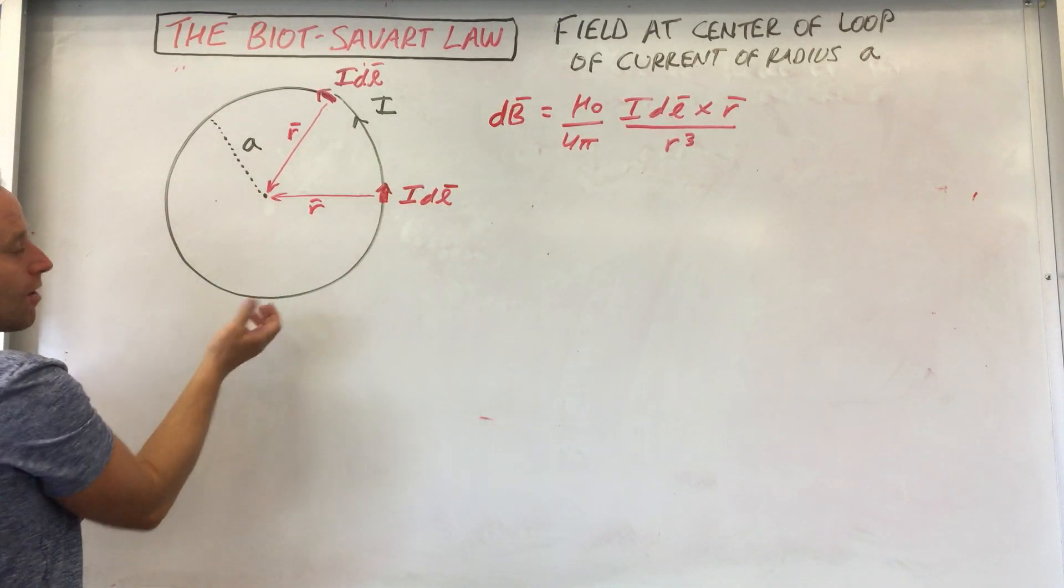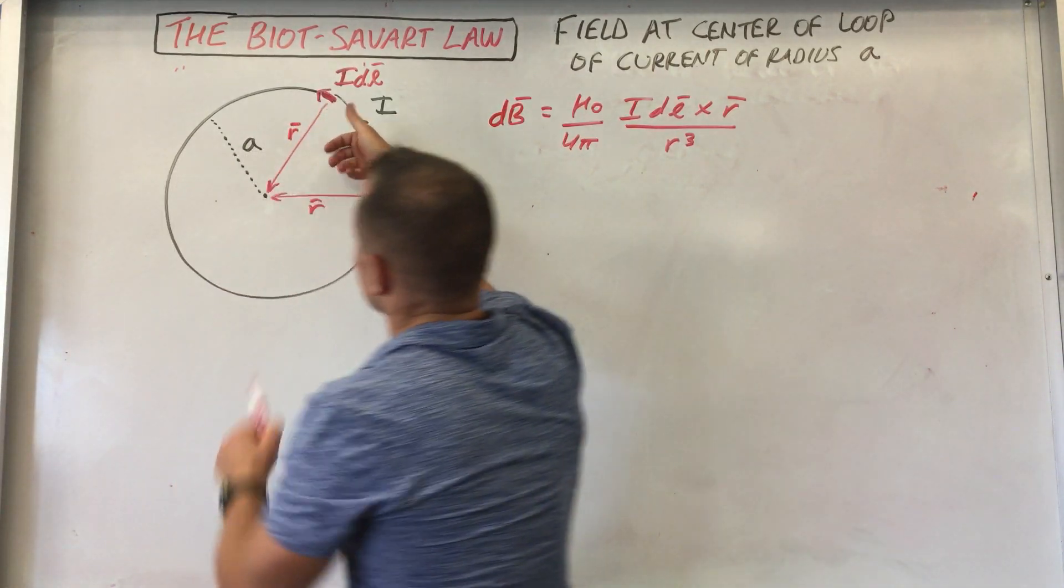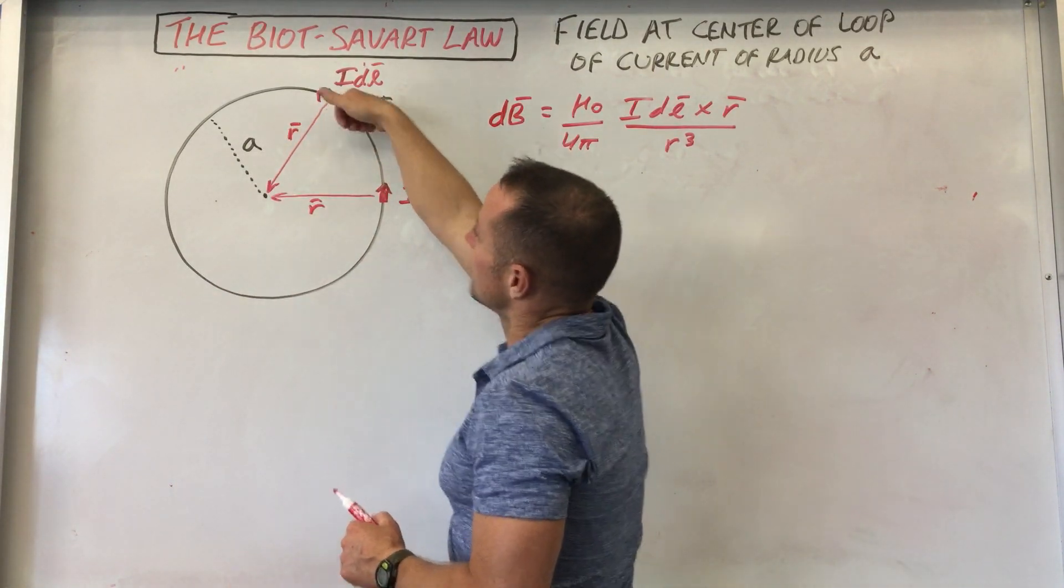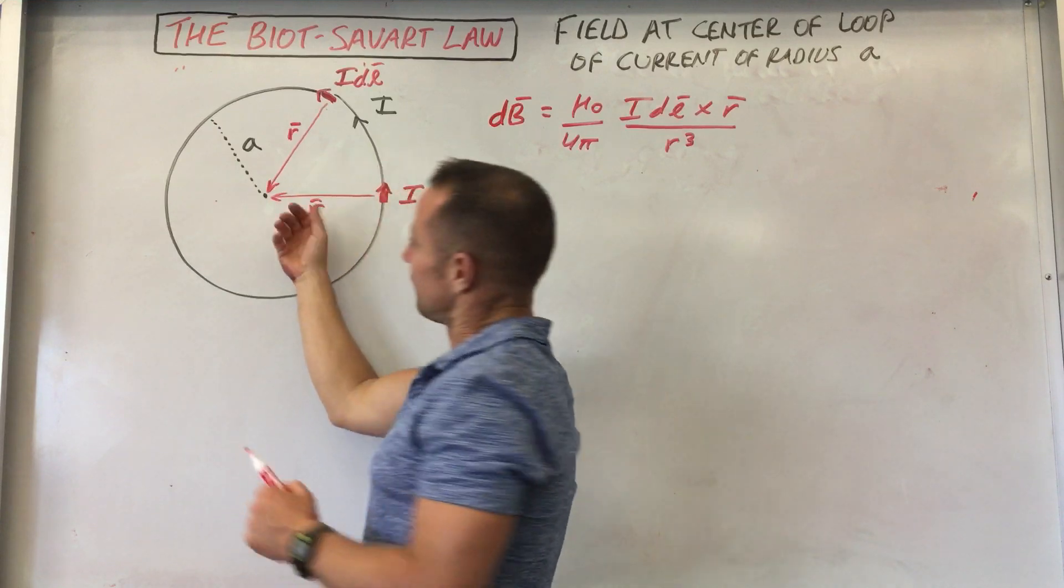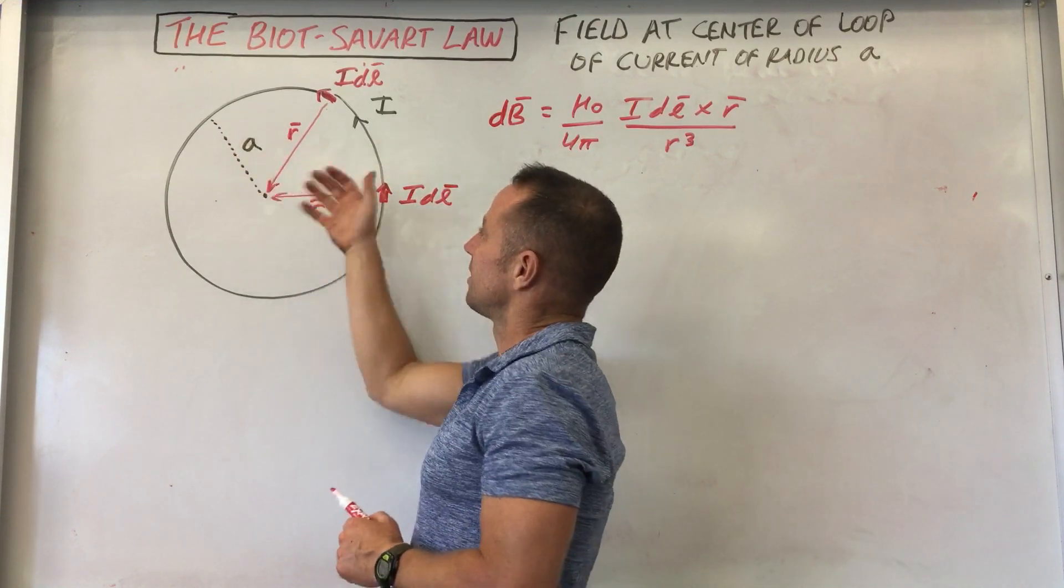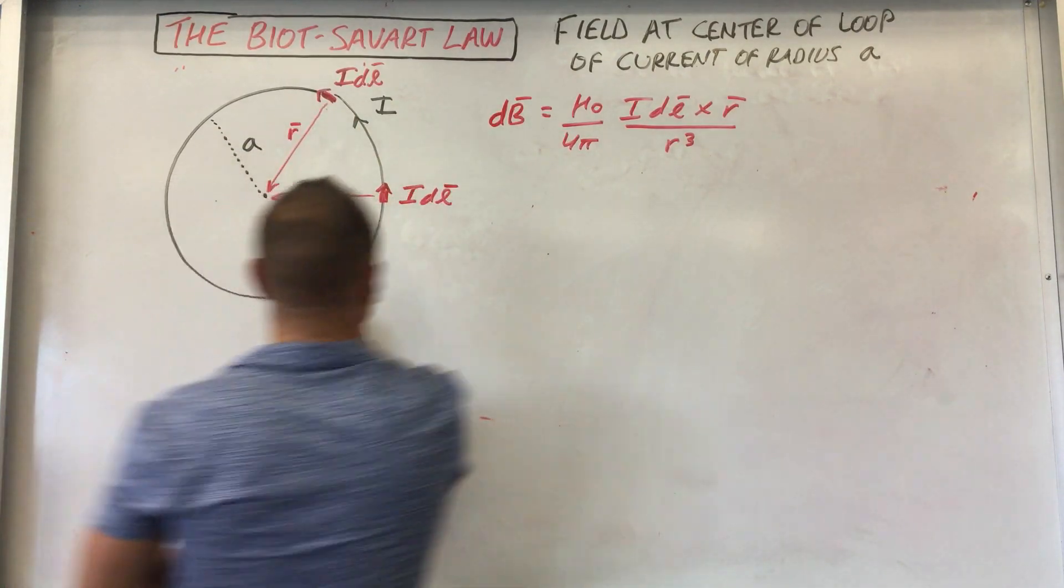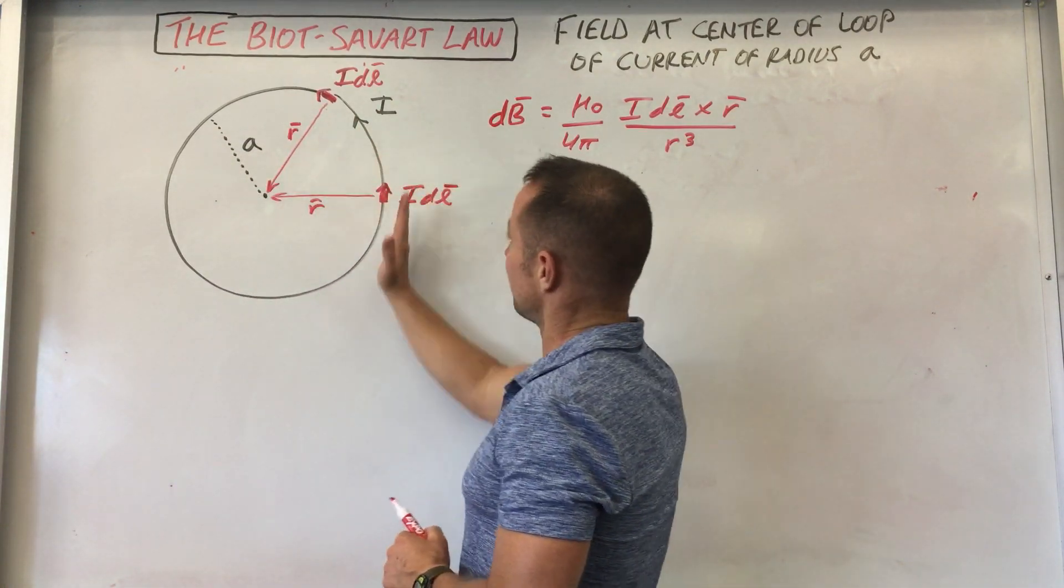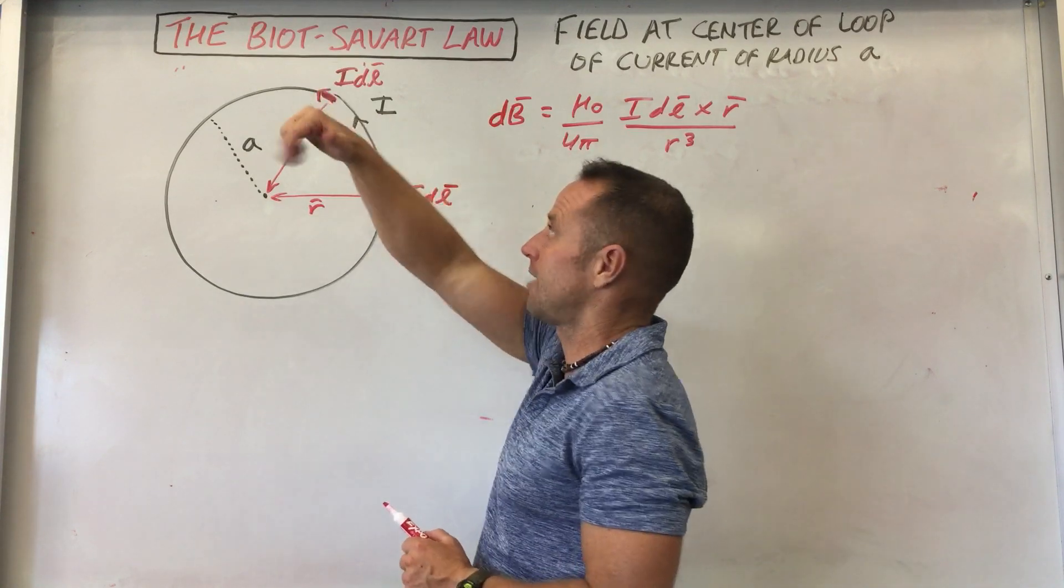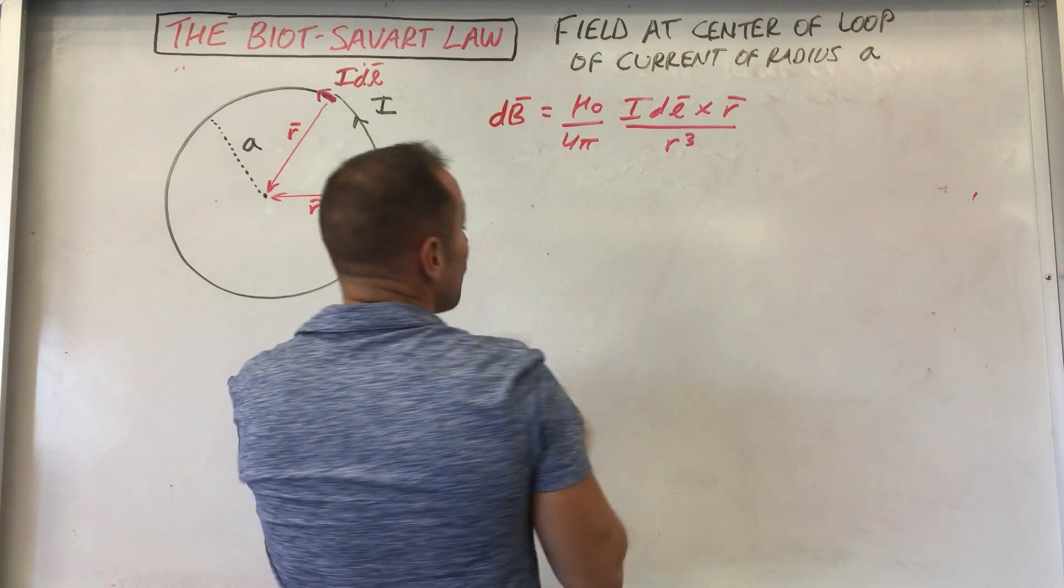Or you may have even known from the way your physics class has been taught that if you grab the wire with your thumb in the direction of the current, you can kind of see that the field is just going to come out everywhere in the center of this circle. But you can also see it from the direction of DL cross R. Fold DL into R vector and it's out. So DL cross R just always points out.